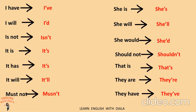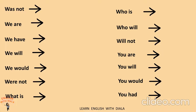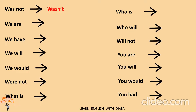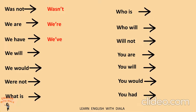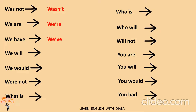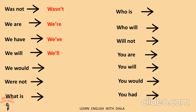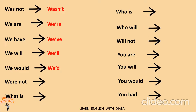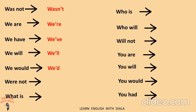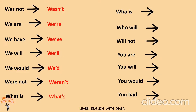They have — they've. Was not — wasn't. We are — we're. We have — we've. We would — we'd. We will — we'll. Were not — weren't. What is — what's.